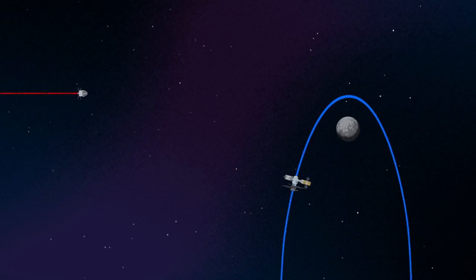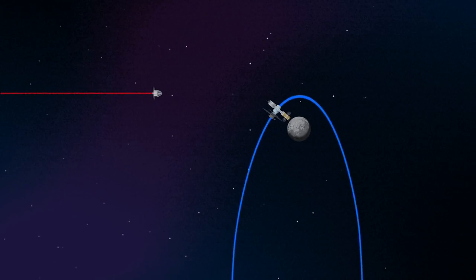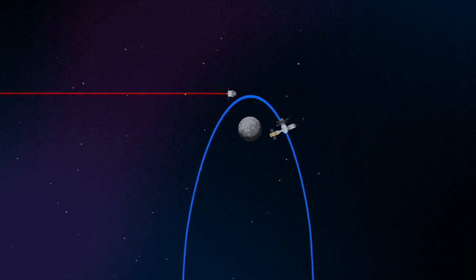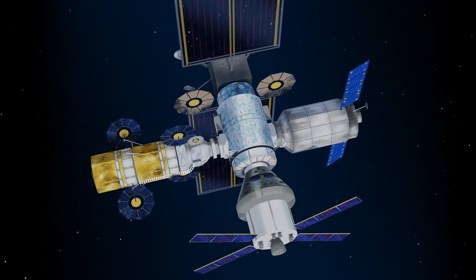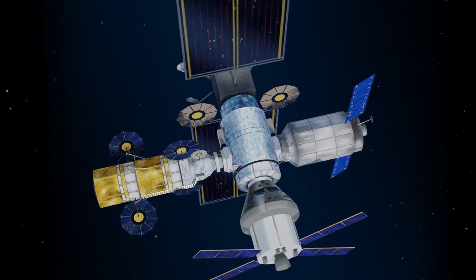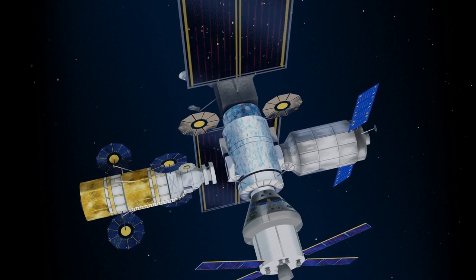Returning to our crew as they approach Gateway, the Orion must match the elliptical orbit of the station in order to successfully dock. Once on board, pre-selected crew members transfer to the lunar lander, while those assigned to Gateway remain on station.